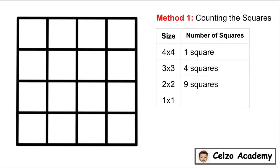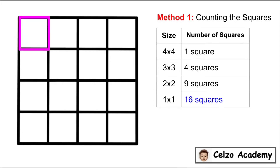And finally, 1x1 squares. Obviously in this shape, there are 16 squares that are 1x1 in size. So now if we add 1 plus 4 plus 9 plus 16, that is 30 squares total.